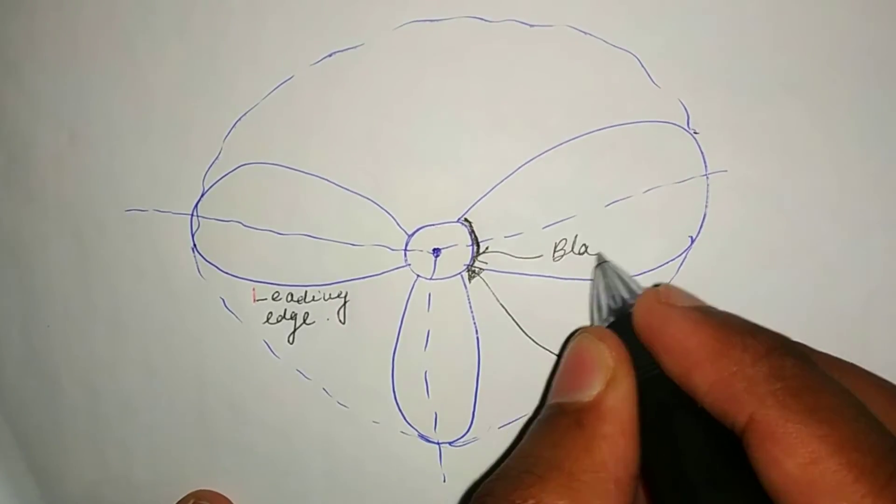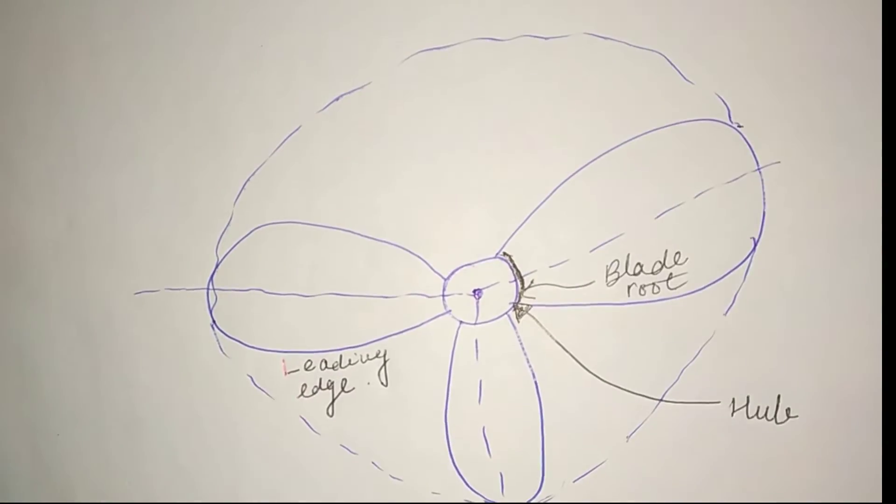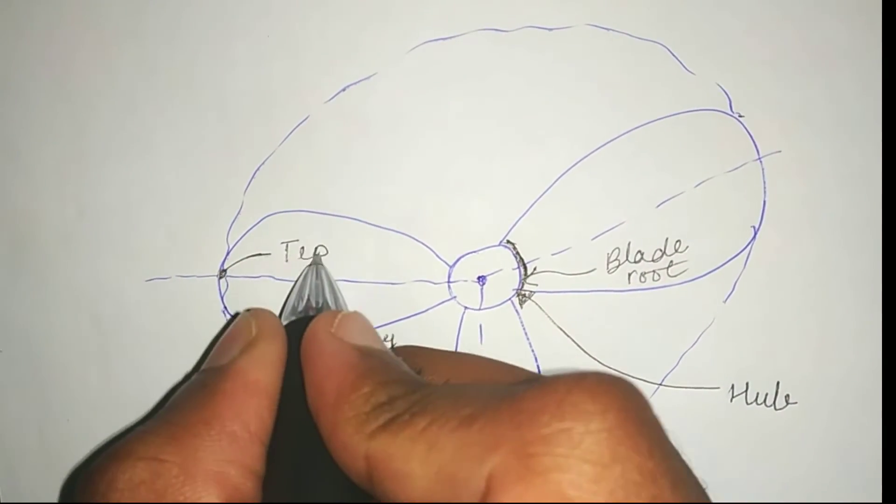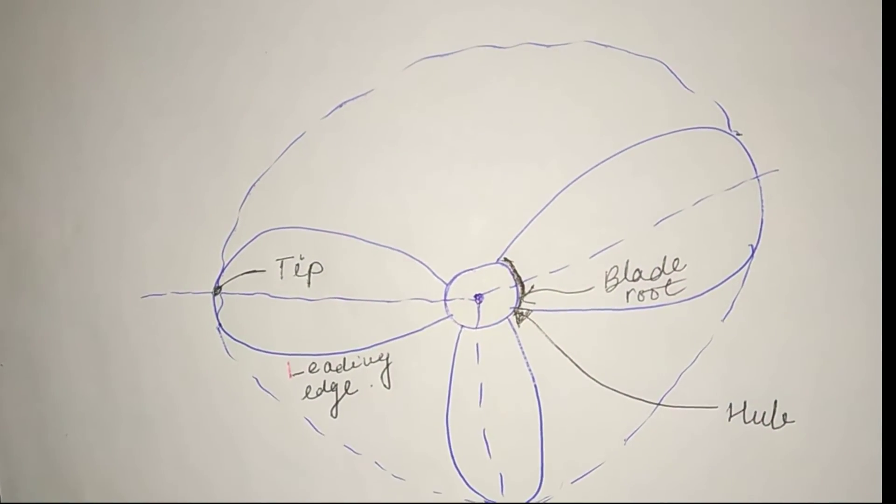Blade root is the area from which the blade attaches to the hub. The hub is the solid cylinder located at the center of the propeller.